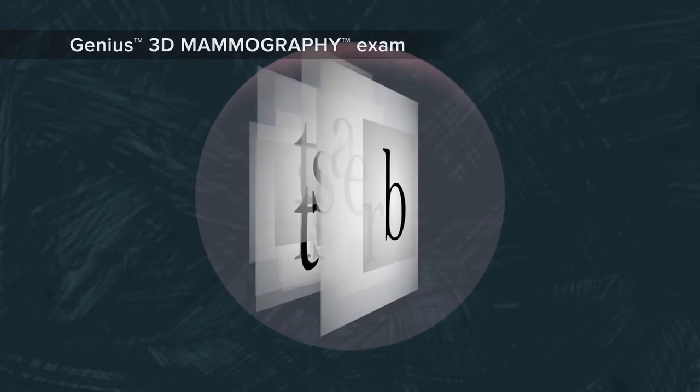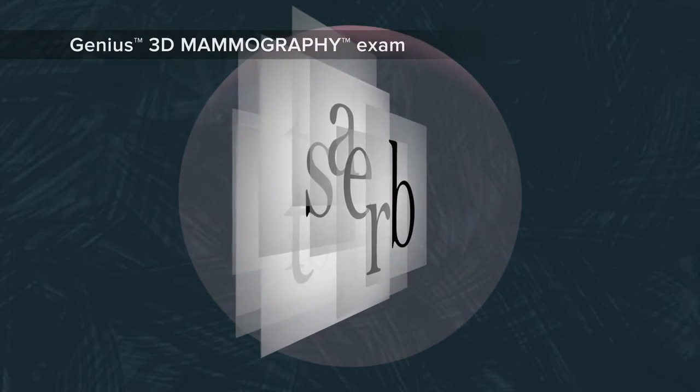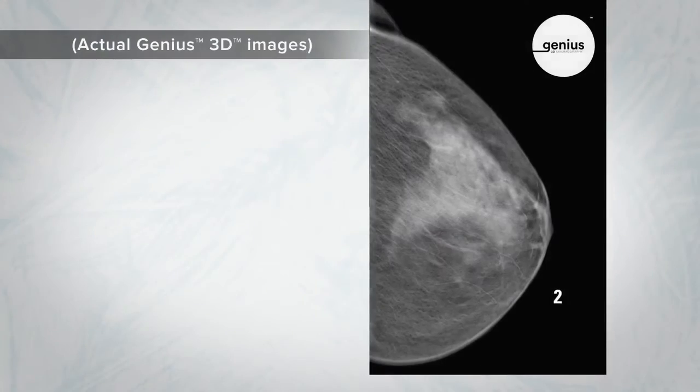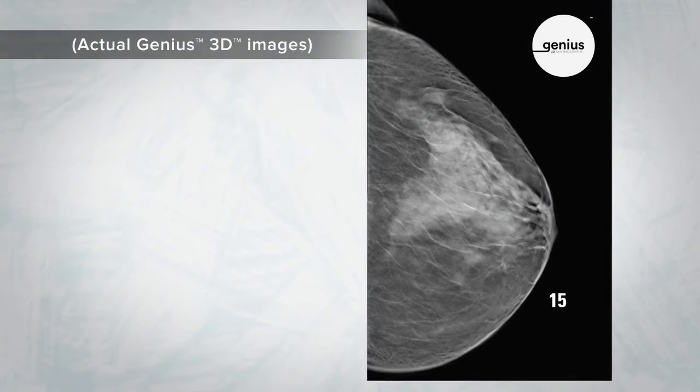A Genius 3D mammography exam is different because it shows your tissue in very thin layers, almost like turning pages in a book. There's less chance for a cancer to hide behind overlapping tissue.